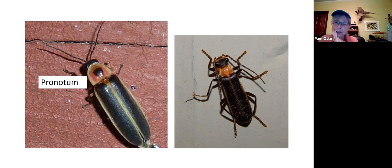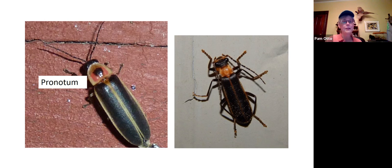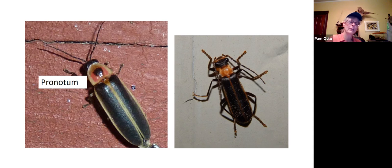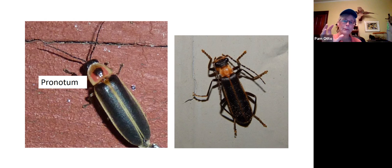Soldier beetles are usually predators — they eat other bugs and sometimes sip nectar. There's some debate in the coleopterist world about what constitutes an adult firefly diet — some fireflies do prey on other lightning bugs, but mostly they sip nectar. They only last a couple of weeks as adults. Soldier beetles have a slightly longer adult stage of life because they are known to feed on other insects.